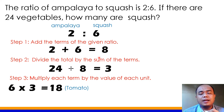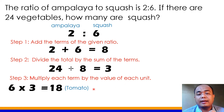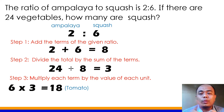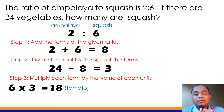Paano natin malalaman kung tama yung sagot? I-multiply mo yung ampalaya term — 2 times 3 equals 6. I-add mo ang 6 sa 18. Yes, that gives you 24. Kung 24 yung sagot, then your answer is really correct.